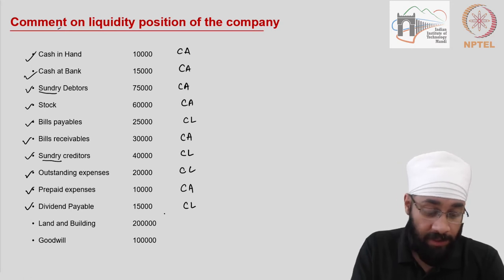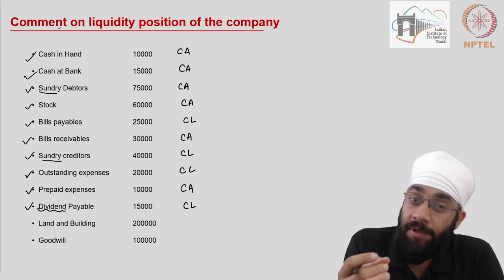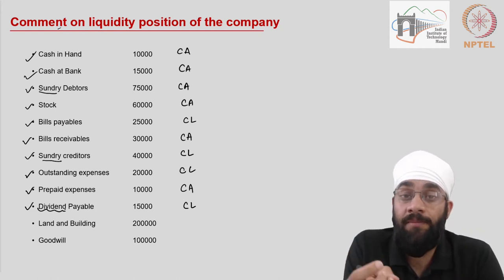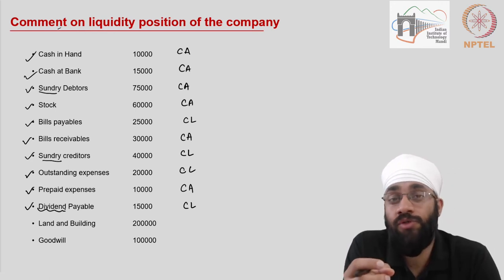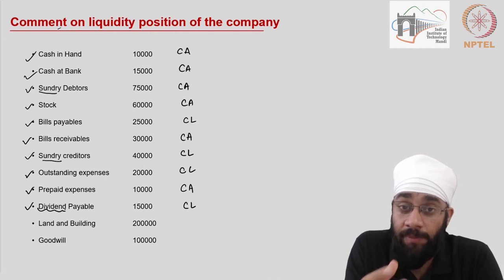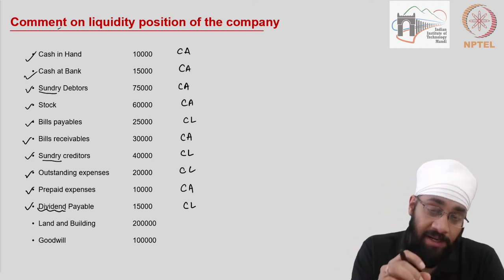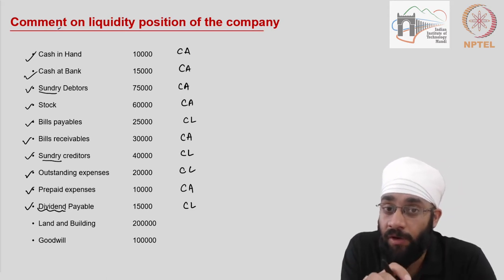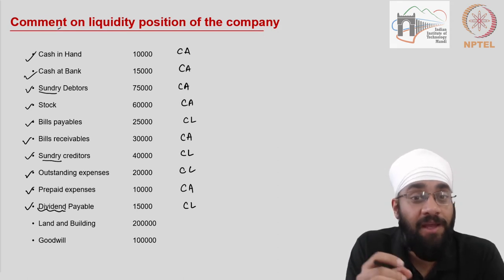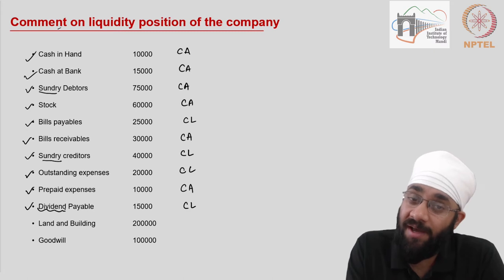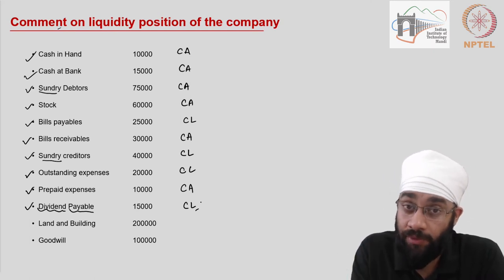Dividend payable is a current liability. This refers to the equity dividend which the company has declared but the shareholder has not claimed yet. There is a process through which the dividend is finally paid to shareholders; the company keeps that amount in a separate bank account so it is not used for other purposes. Until the dividend money is distributed, this amount is treated as a liability on the company because the shareholders — a separate legal entity — have a claim on it. So, dividend payable is a current liability expected to be paid off within the next one year.